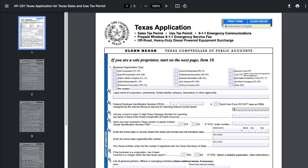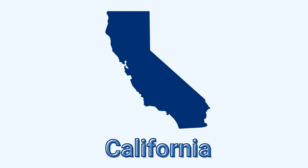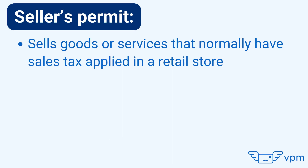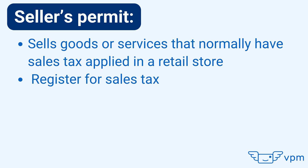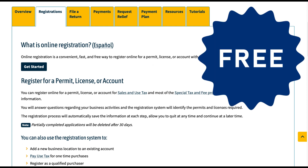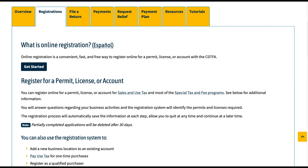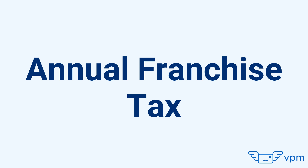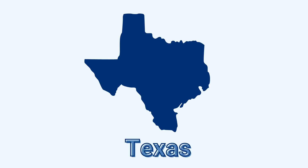Depending on where your California LLC is located and the industry it operates in, you may need certain California business licenses and permits. If your business sells goods or services that normally have sales tax applied in a retail store, your California LLC will need to register for a seller's permit. You can obtain a seller's permit for your California LLC online for free, and it's valid for as long as your LLC is conducting business.